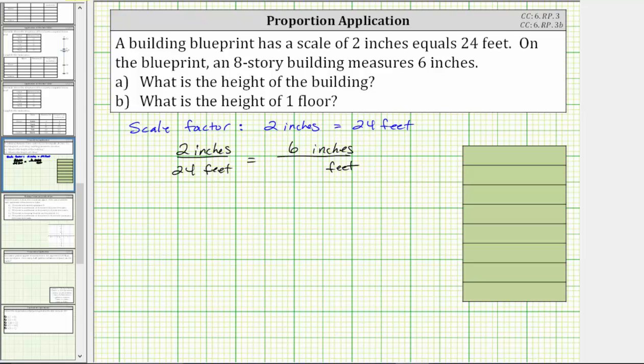Looking at the units of inches, notice two times three is equal to six. So if we multiply two inches by three and then multiply 24 feet by three, we will get an equivalent ratio which will tell us the height of the building. So again, because two times three is equal to six, we also multiply 24 by three. 24 times three is equal to 72.